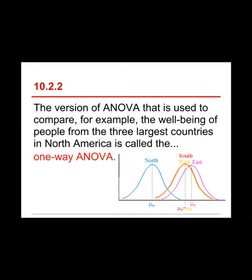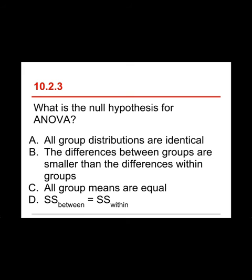As shown in the chart, if you have several different groups that are all categories within the same categorical variable, you would use a one-way analysis of variance to compare the means — whether comparing the US, Canada, and Mexico, or north, south, east, west, or whatever you wanted. Question three: what is the null hypothesis for ANOVA? The choices are a) all group distributions are identical, b) the differences between groups are smaller than the differences within groups, c) all group means are equal, or d) the sum of squares between is equal to the sum of squares within.